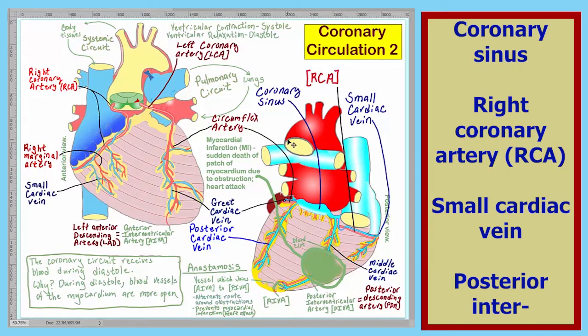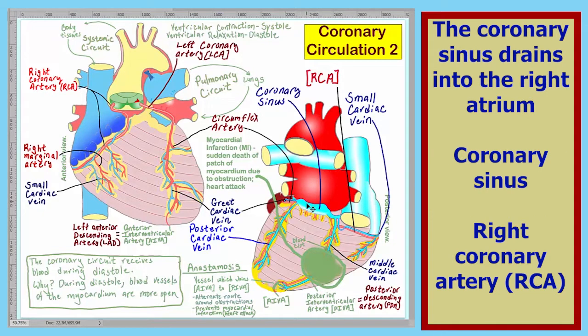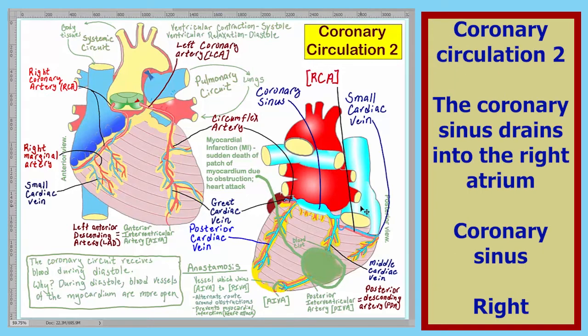All of the coronary veins drain into this large structure here, the coronary sinus. The coronary sinus itself drains into the right atrium, which would be under here.